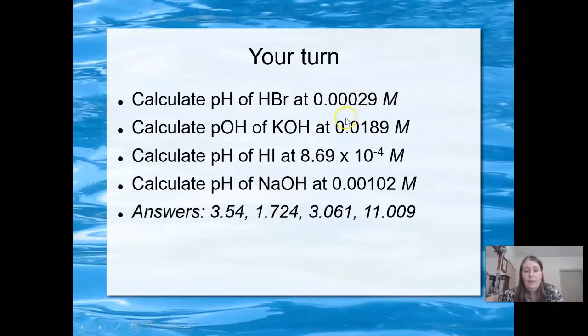So I would expect for this to be an acidic solution because it's HBr. Since that's a monoprotic strong acid, the concentration of H+ is going to be the same as the HBr. So I would just type in negative log 0.00029. Round that to two decimal places. I get 3.54.